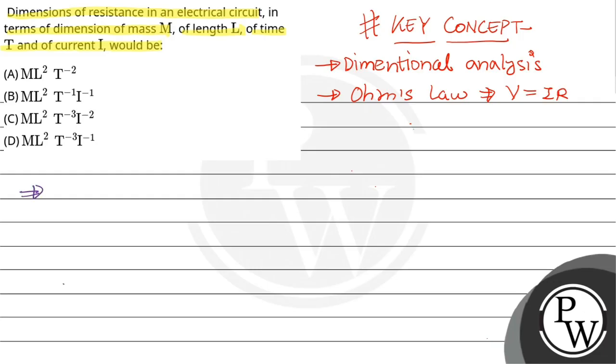Now we know that V equals IR, so what is R going to be? R is going to be V divided by I.